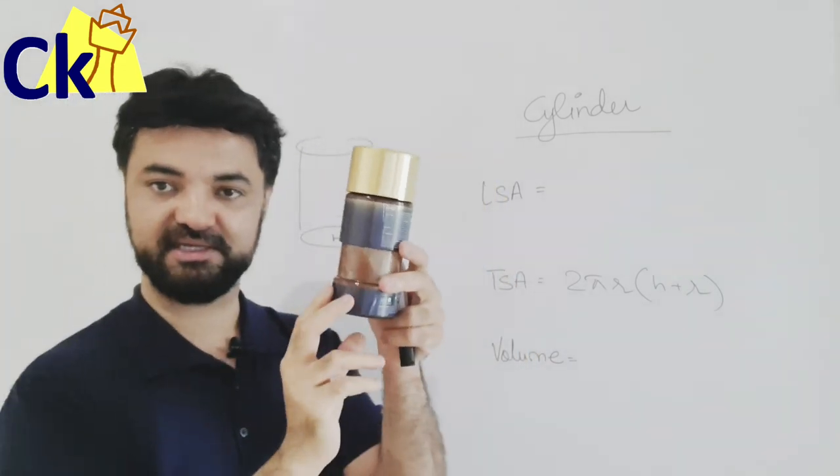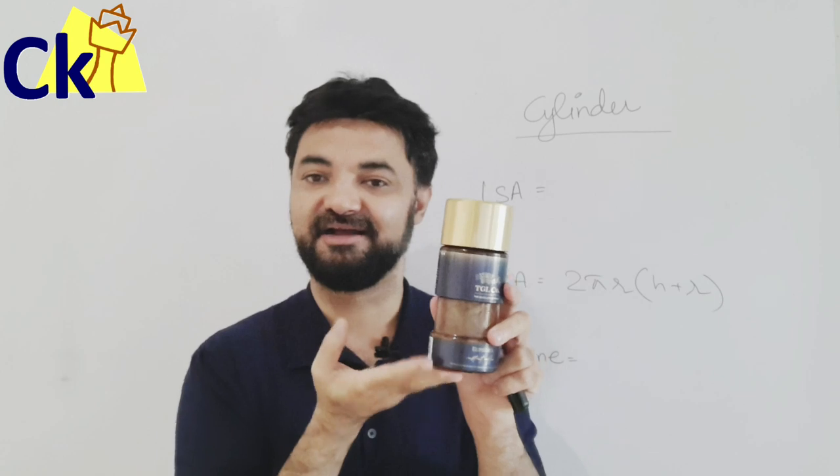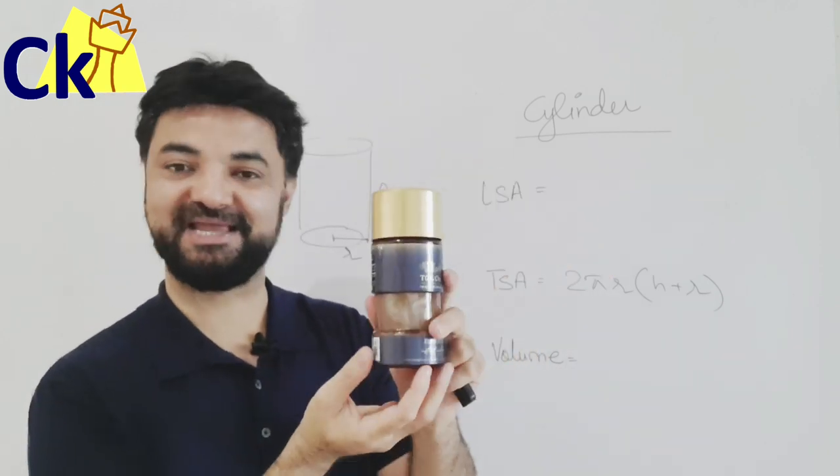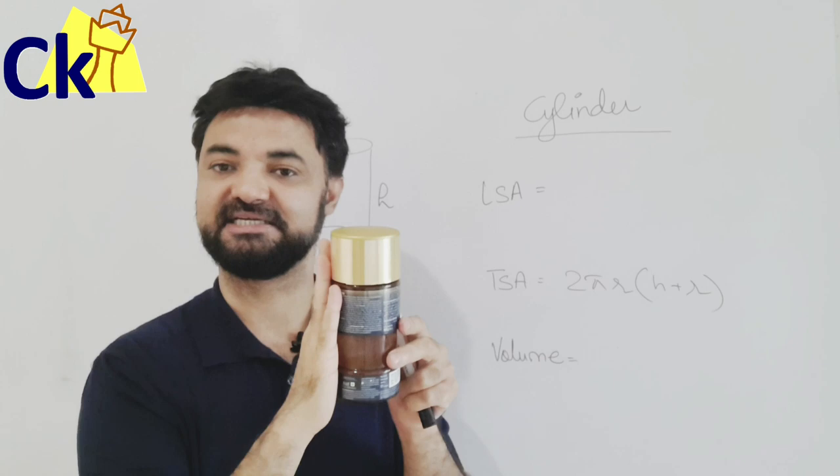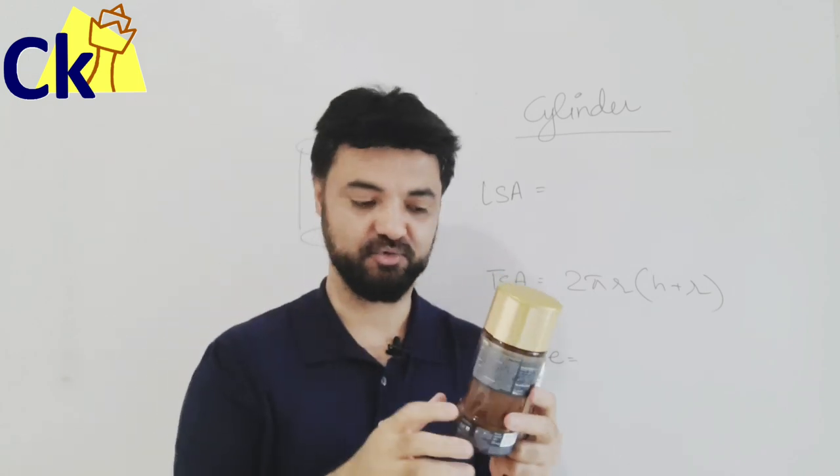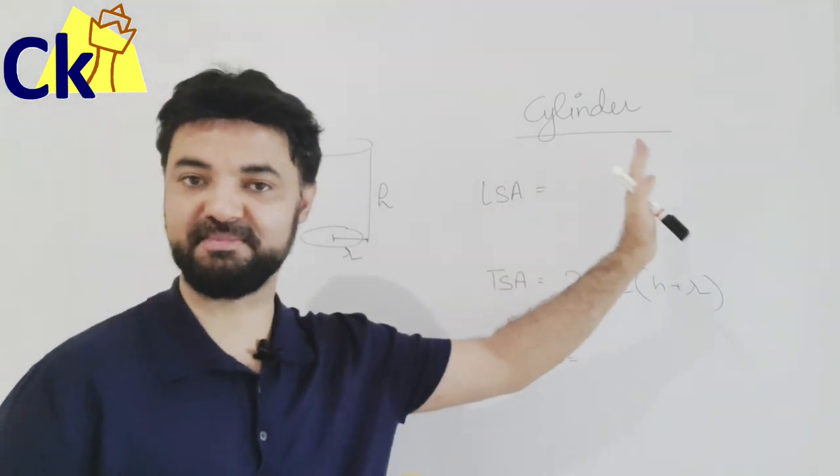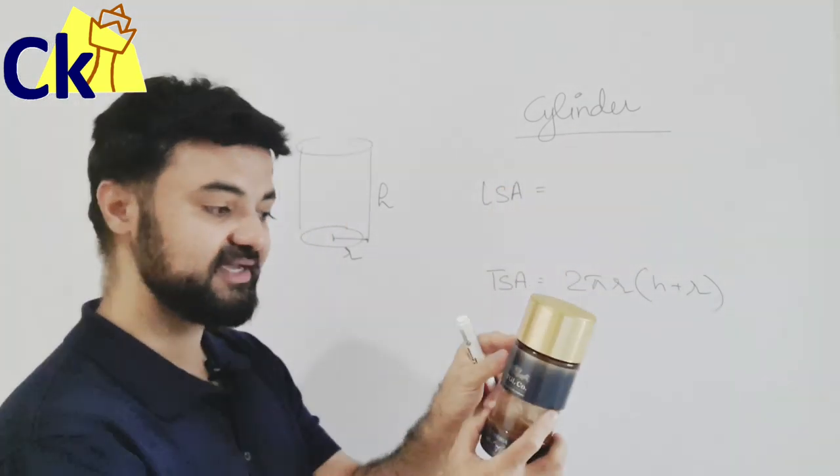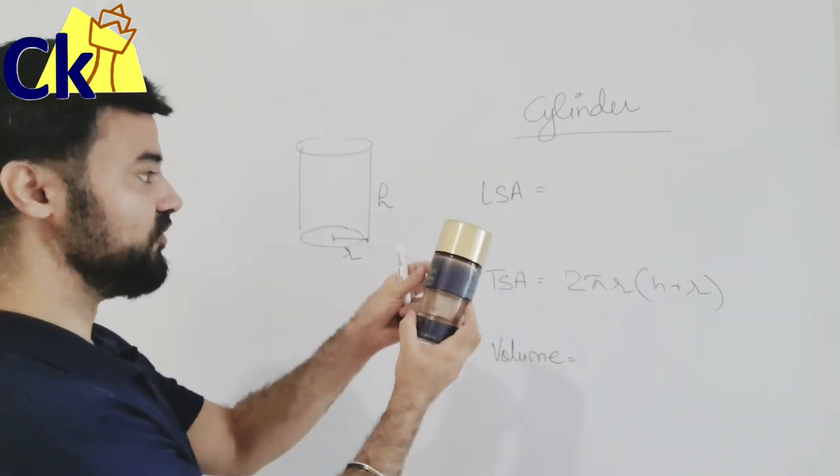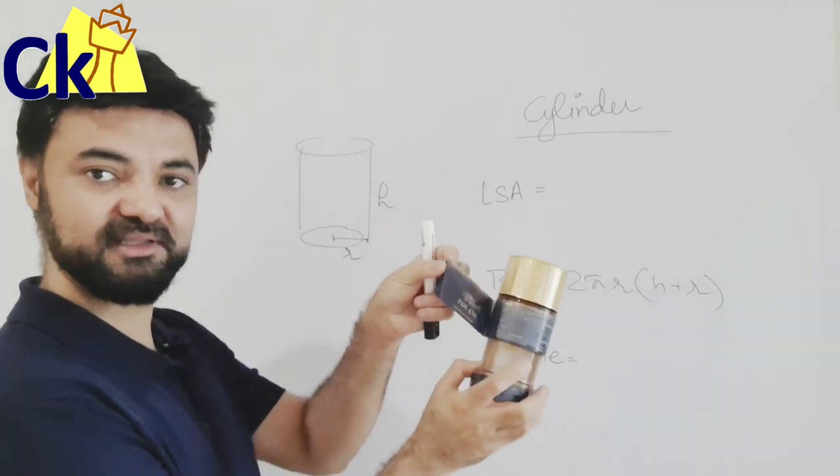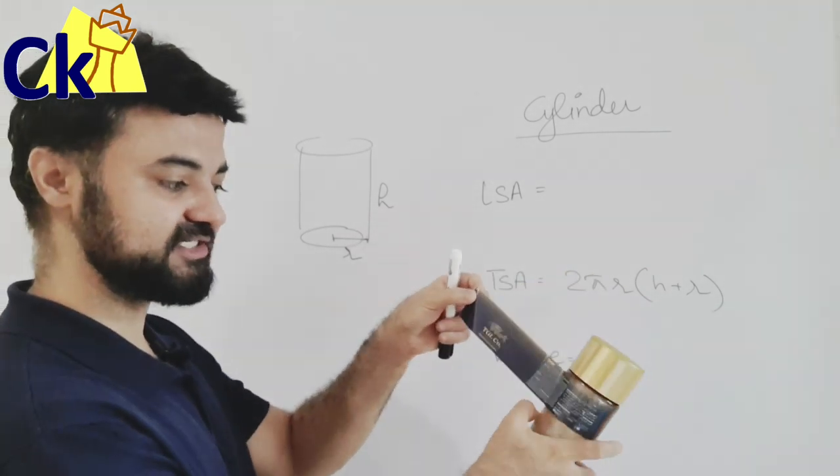For example, the radius of this cylinder - I took this bottle - is base minus top. If I remove them, this is called lateral surface area. Now find the area of this thing. One way is to remember the formula. Otherwise, if I open this label, can you guess which diagram it will form?